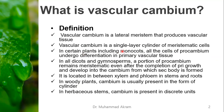In certain plants, including monocots, all the cells of the pro cambium undergo differentiation into primary vascular tissue. In all dicots and gymnosperms, a portion of pro cambium remains meristematic even after the completion of primary growth, and develops into the pro cambium from which the stem tree body is formed. It is located between xylem and phloem in stems and roots. In dicot plants, cambium is usually present in the form of a cylinder.